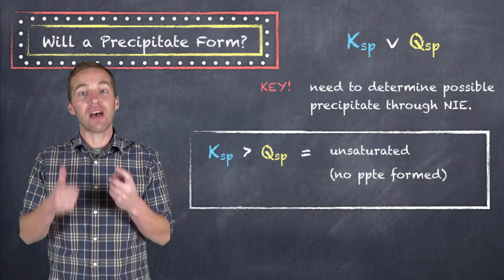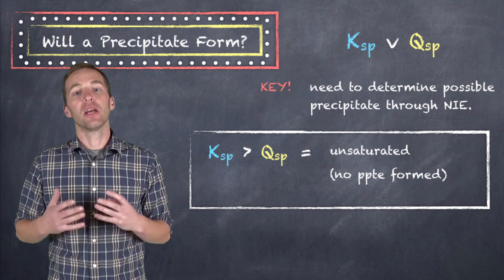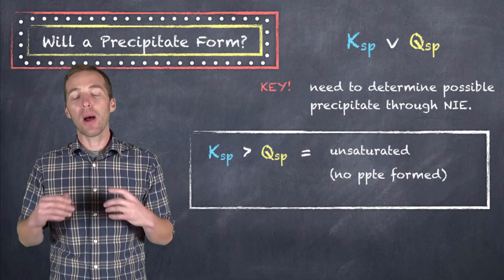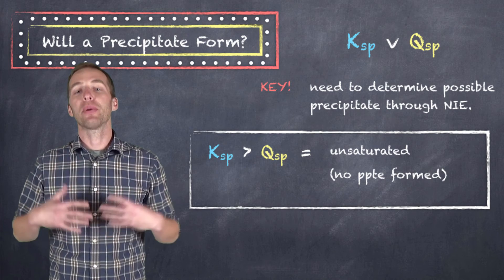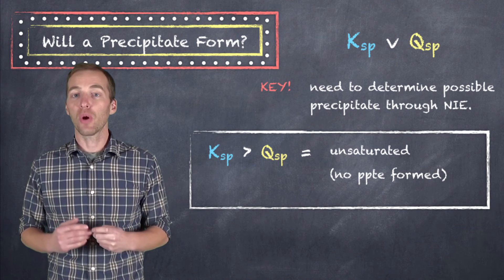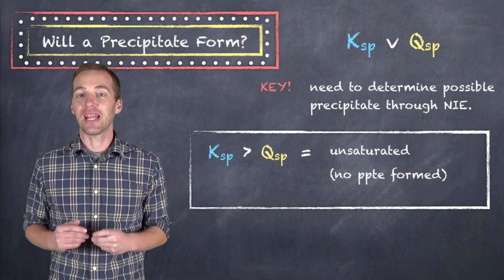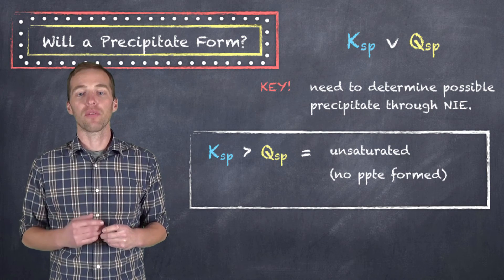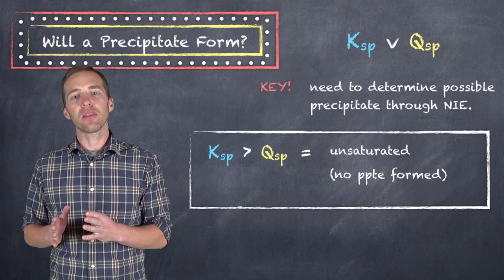So the concentrations of the ions have to go up, which means in order for the concentration of those ions to go up and for the Qsp value to go up, there has to be more of that solid dissolved. So we say that at this point there's no precipitate formed, and we can add more of the solute or more of the solid to the solution.